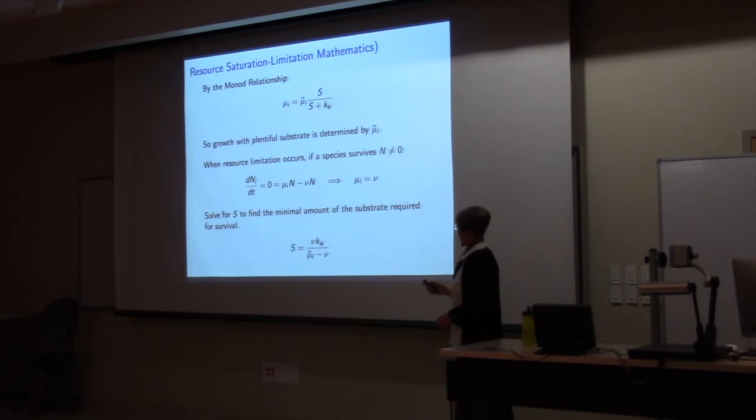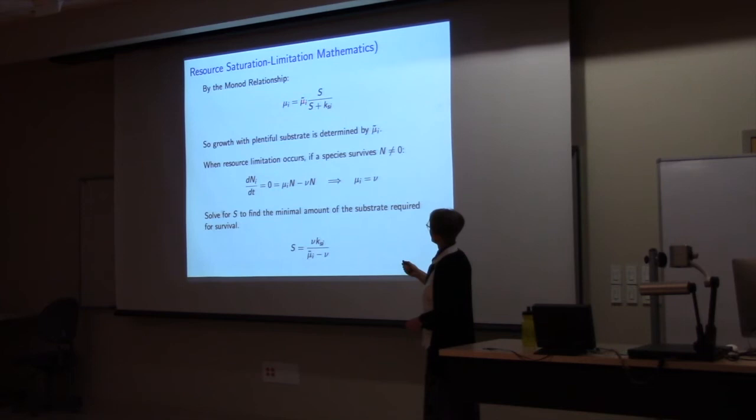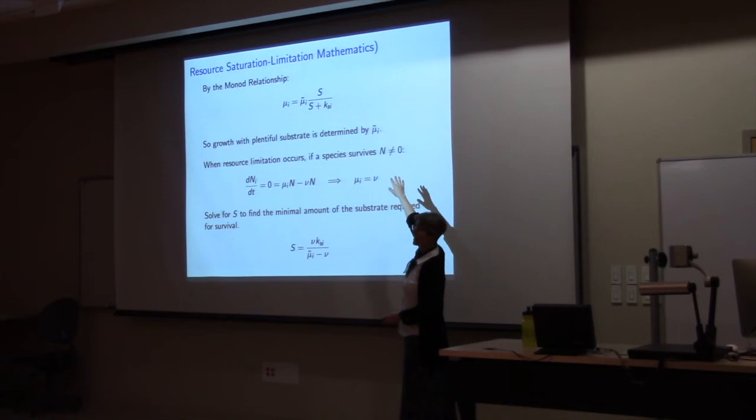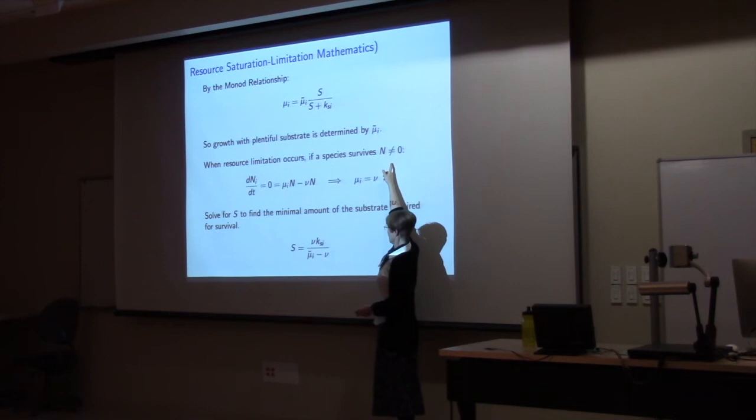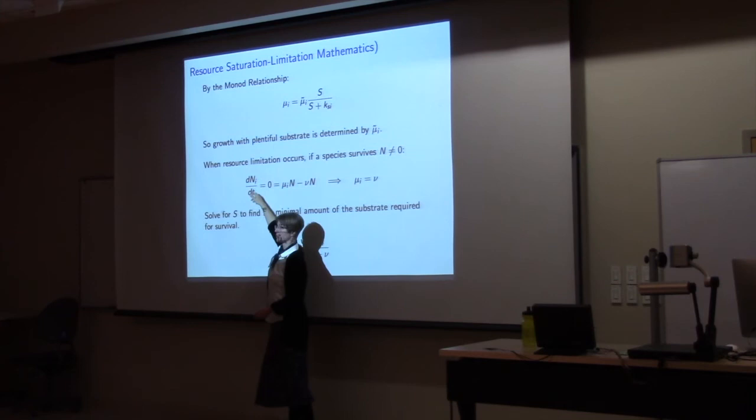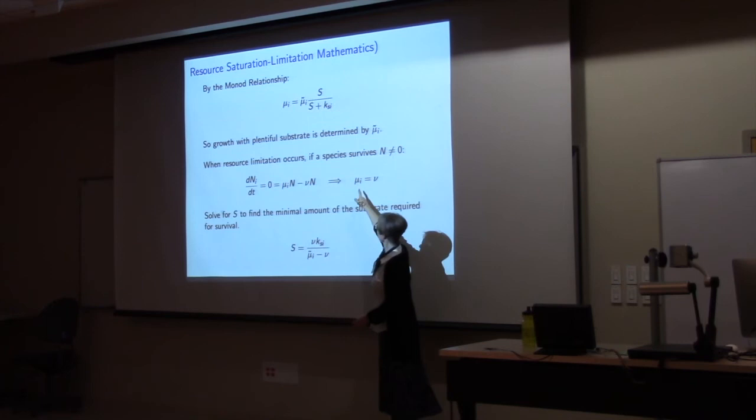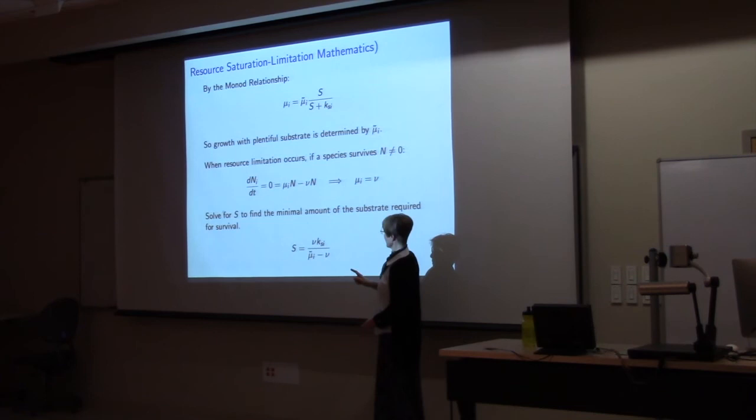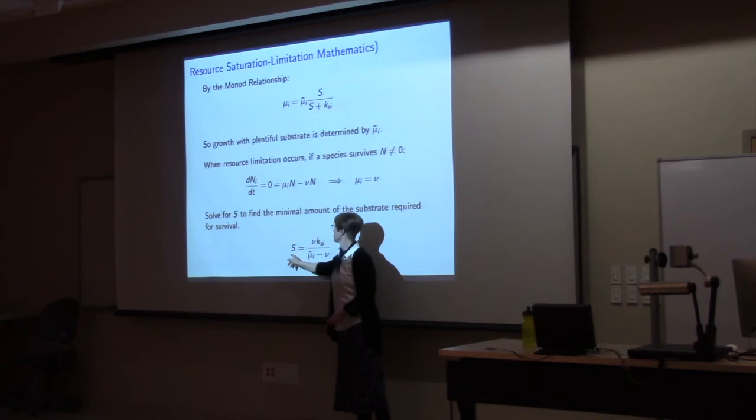So we can look at some mathematics for that. This is one of the equations that we looked at. This relates the actual growth to the maximum growth and the amount of nutrients. The nutrients is represented by S here. So when there's a lot of S, and S is really big and KS then is smaller, we've got a lot of nutrients, we've got the maximum growth rate. When resource limitation occurs, if a species survives, the number of species, this would be the number of phytoplankton we've got, that can't be zero. So its change will go to zero, it will level off, but the value of N won't be zero, so that tells me that its growth rate has to equal this flushing rate. So then I can plug that in to that equation, and I can solve for the amount of nutrient that I've got for that.